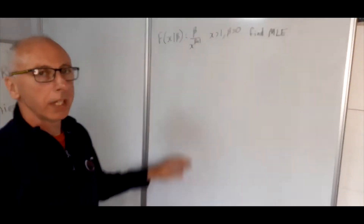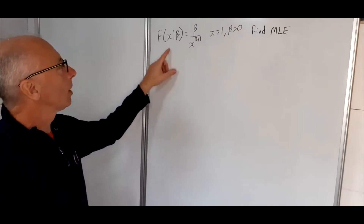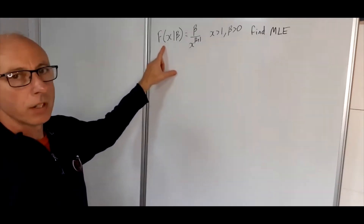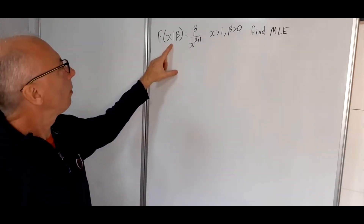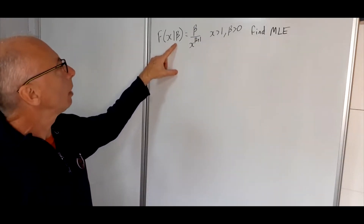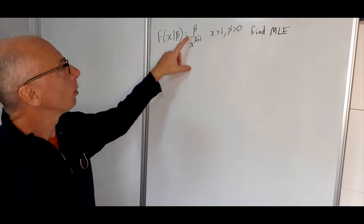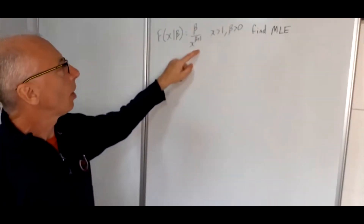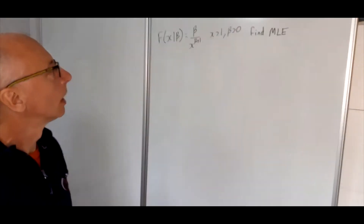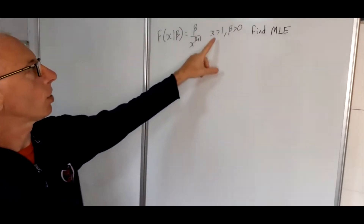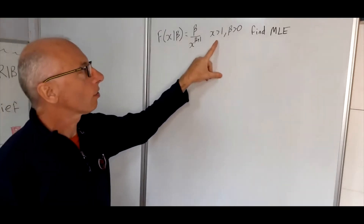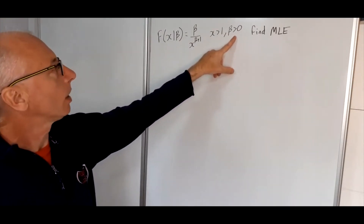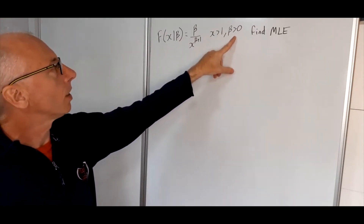We're given this PDF from the Pareto distribution: f(x | β) = β divided by x to the power of β plus 1. The conditions are that x is greater than 1 and β is greater than 0.